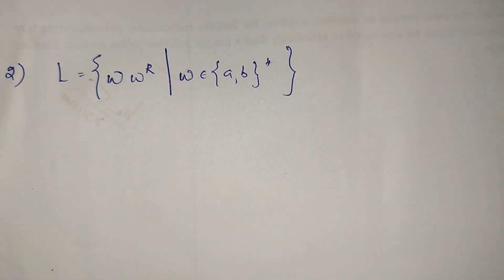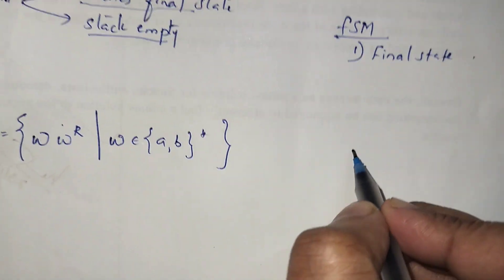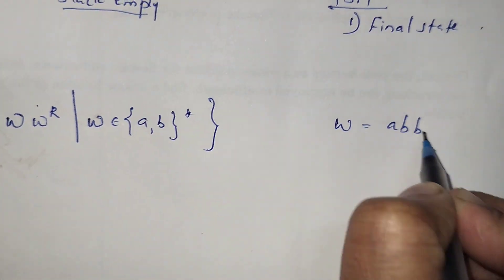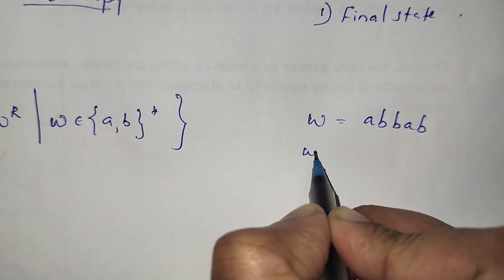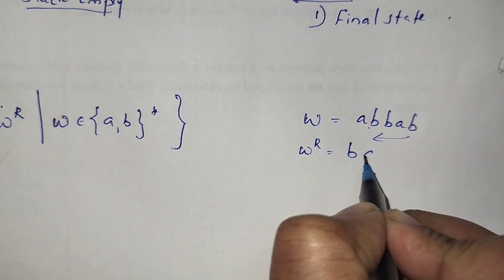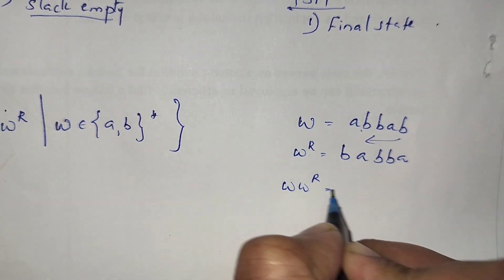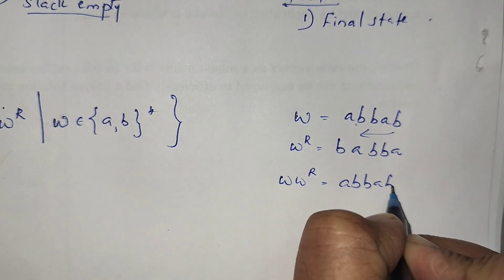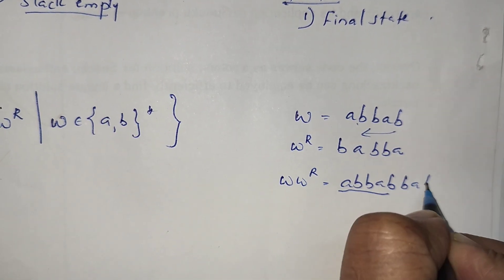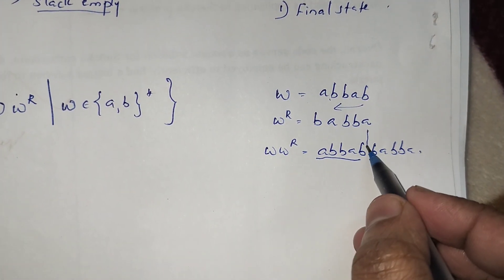Next problem: the language L equal to w w^r, where w^r means the reverse of w. For example, if w equals a b b a b, then w^r is b a b b a. So w w^r would be: a b b a b — then its reverse — b a b b a. The key is identifying the middle of the string.